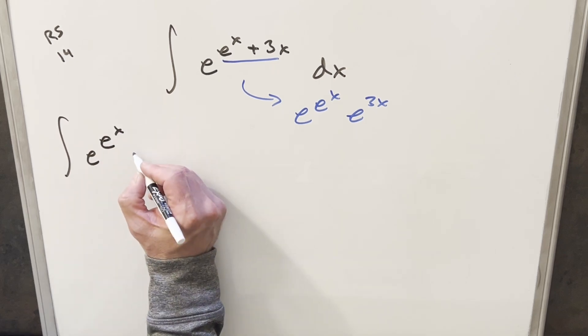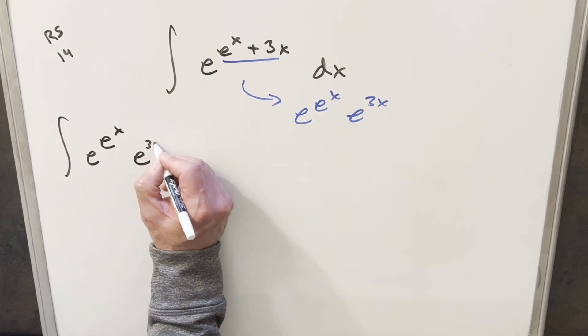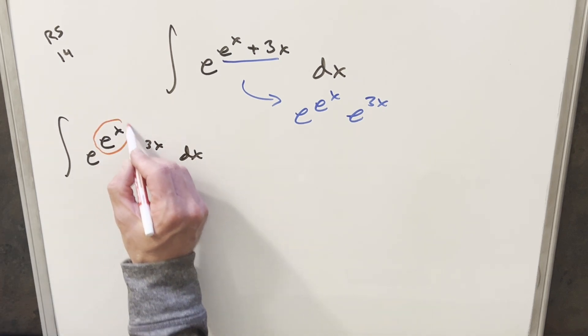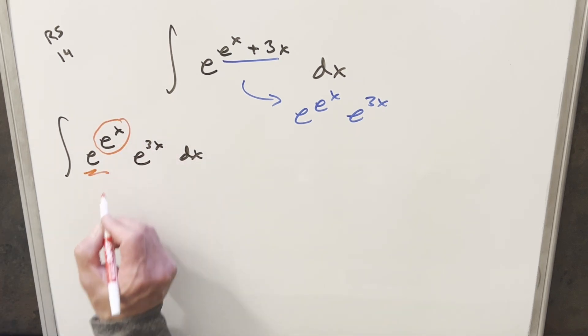This whole thing is making me think u substitution. There are a few different ways we can do this. Now clearly we could do a u substitution for e to the e^x because we've got e to the e^x right here. It's going to simplify this complicated thing.